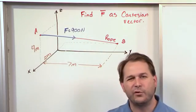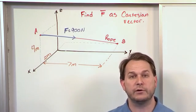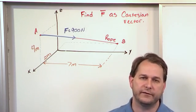We know it goes from A to B, but in terms of I, J, and K—the X component, the Y component, and the Z component of this force—how do we write it as a Cartesian vector?